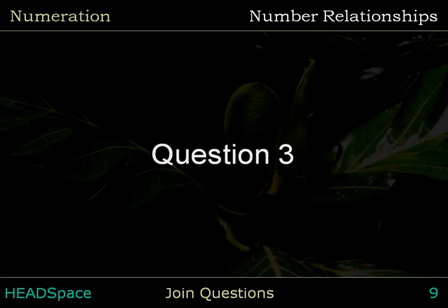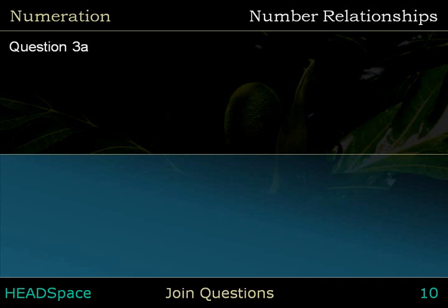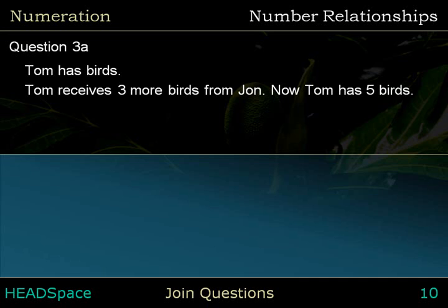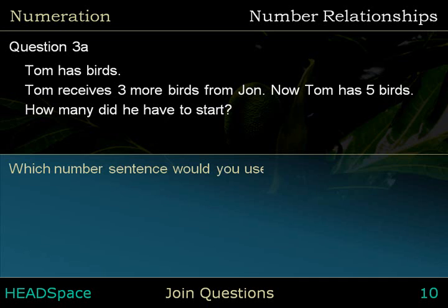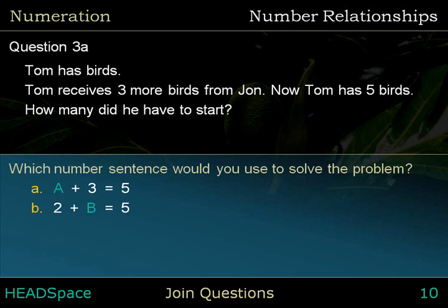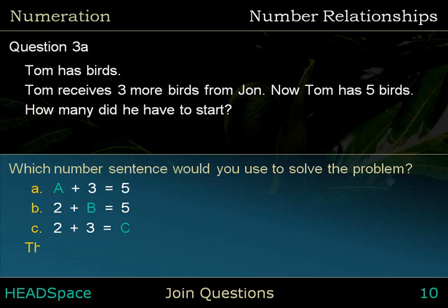Question 3a. Tom has some birds. Tom receives three more birds from John. How many did he have to start? Which number sentence would you use to solve the problem? The answer is: blank plus three equals five.